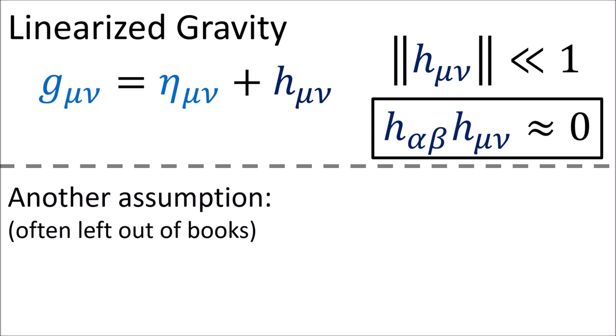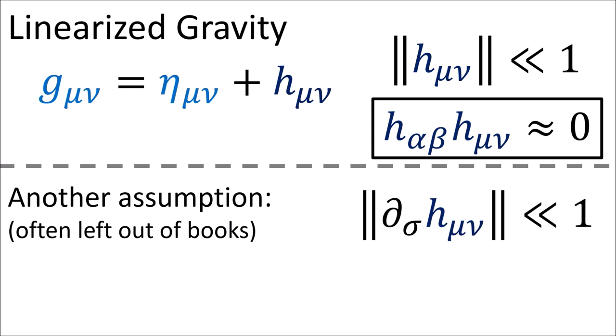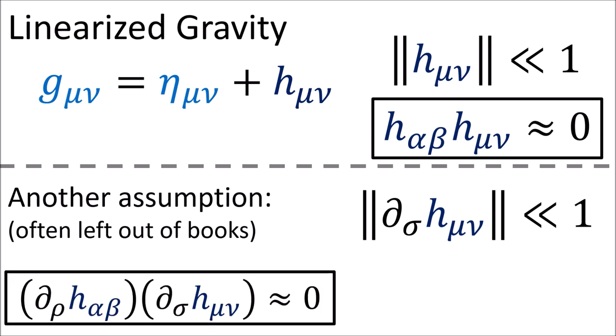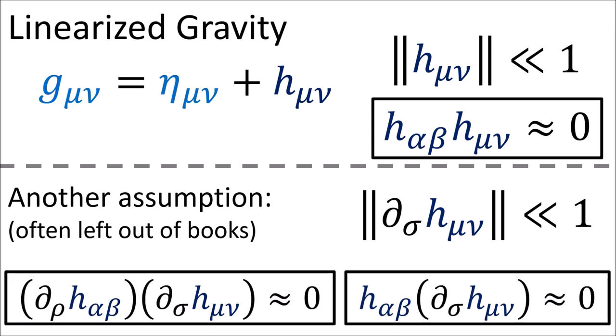There's another assumption of linearized gravity that is often left out of textbooks, and this is the assumption that the derivatives of h are also very small. This means that terms involving the derivative of h squared, or terms involving the product of h and the derivative of h, are extremely small and can be set to zero. I've almost never seen this property stated explicitly in most general relativity notes, but all the derivations I've seen in weak gravity seem to assume this property implicitly. So in my videos, I'm going to be working under the assumption that linearized gravity means h is small and the derivatives of h are small.